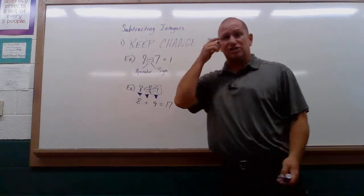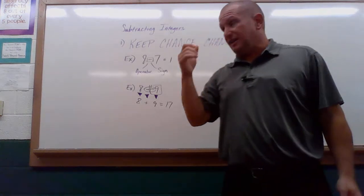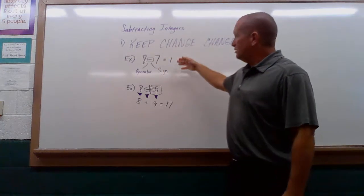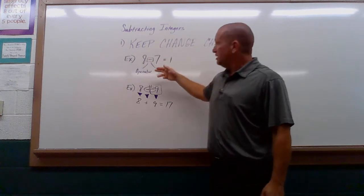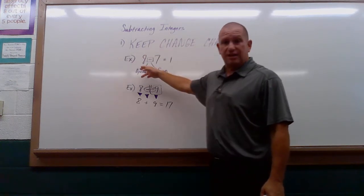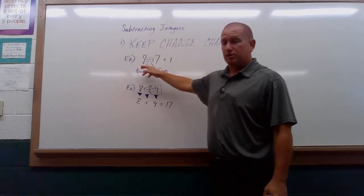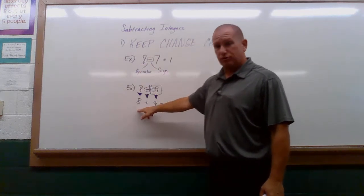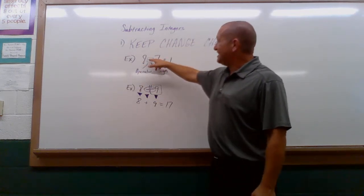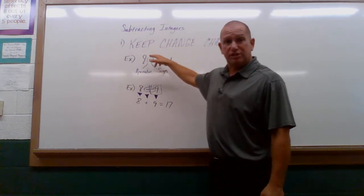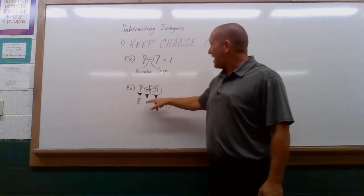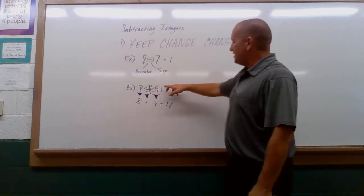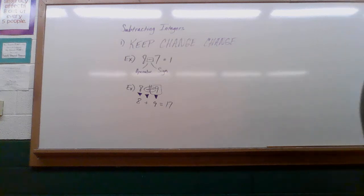So keep, change, change tells you, in the order of the problem given, what you're going to do with each part. The first part is the first integer — it could be positive or negative, it comes straight down. The second is the operator, which is the minus sign, and you change that into addition. The last is the actual second integer.